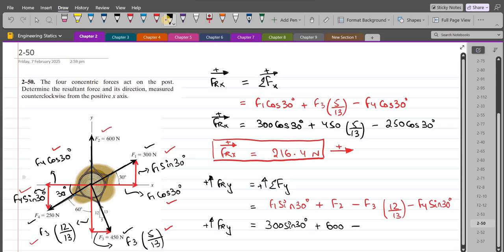Minus F3, which is 450 Newtons, so 450 times 12 upon 13, minus F4, which is 250 Newtons.